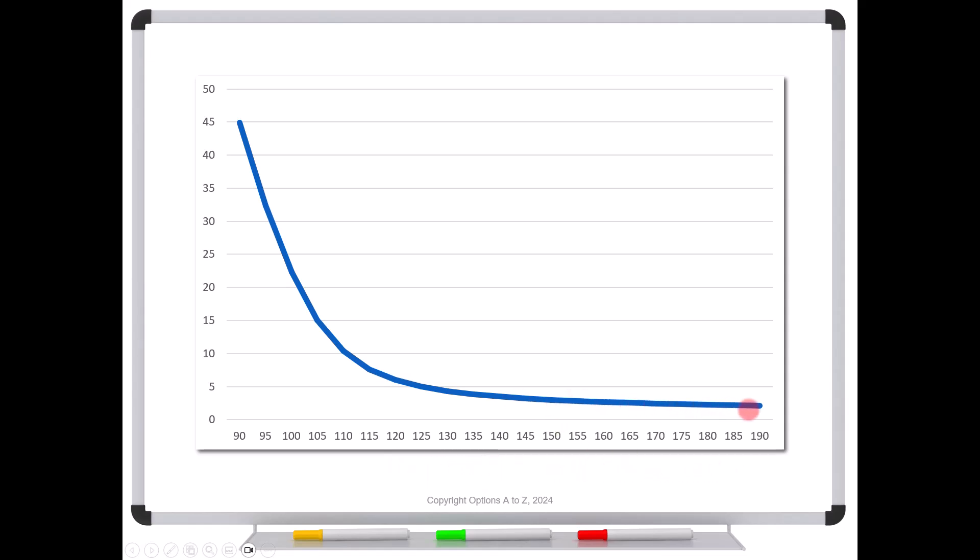But the thing to notice about this graph is that as we push the option deeper and deeper in the money, we are starting to converge, flatten out right here at 1. And that's another way of showing that your deep in the money options really have no leverage or very, very little because you're basically trading for the level of the stock, which is why it's called Trading at Parity.